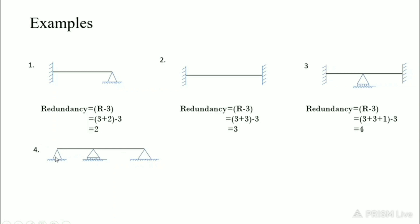Fourth example: a beam with both sides hinged and a roller support at the center position. Redundancy equals r minus 3, which equals 2 (hinged) plus 2 (hinged) plus 1 (roller) minus 3, so the redundancy of this member equals 2.